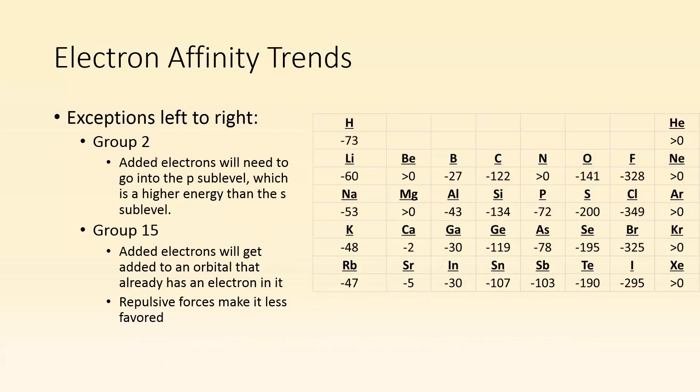Exceptions, you probably picked up on those already. If we take a look at group two, added electrons will need to go into the P sublevel, which is a higher energy than the S sublevel. If I'm taking a look at beryllium, its configuration is 1s2, 2s2. So if I were to add an electron to it, it would have to go to the P sublevel, which isn't as favorable. It's a higher energy than the 2s. So it turns out that value is going to be greater than zero. That's true for magnesium. Calcium and strontium are still very low, not very negative values.